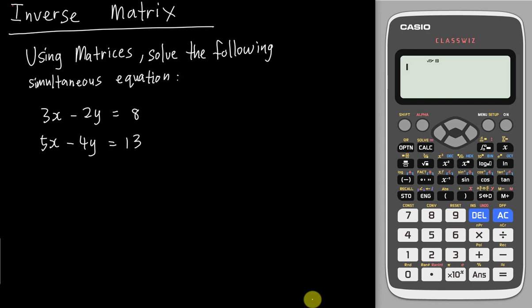As an SPM modern math student, you should know the matrix question definitely will come out one question in paper two, which is they will ask you to solve the simultaneous equation using the matrix method. I will show you the manual way first, then how to use the calculator to check the answer. Because in SPM, you still need to do this kind of question manually. You cannot straight away type in the calculator and get the final answer because you need to show the working.